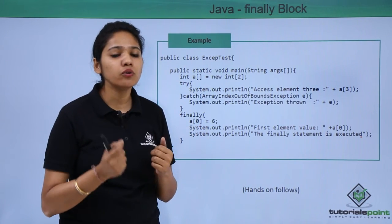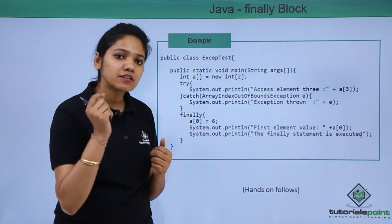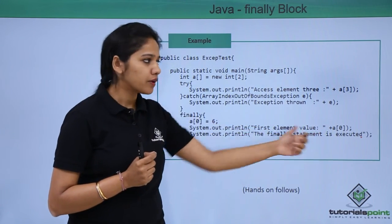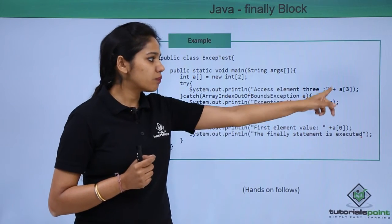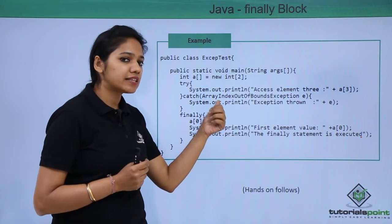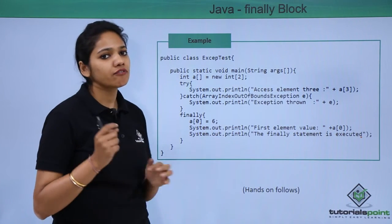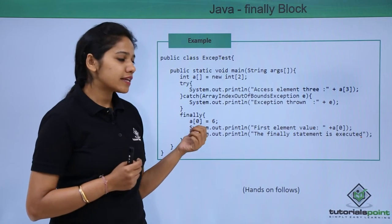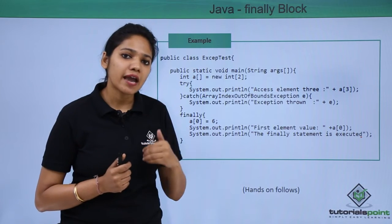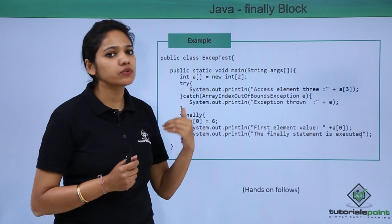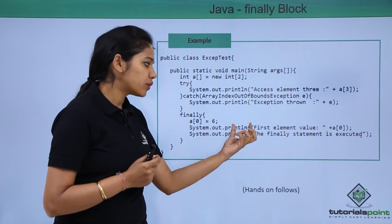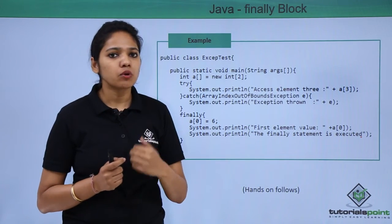In the finally block, we are storing the value 6 at array index 0, then printing that value. Even if we were trying to print a value at index 2 and no exception was thrown, this finally block would still have executed. Let us run this program practically to understand how try, catch, and finally blocks work together to handle exceptions, and how the finally block executes regardless of whether an exception occurs.